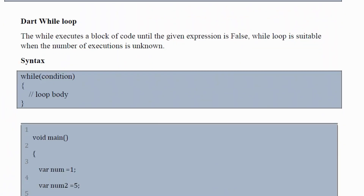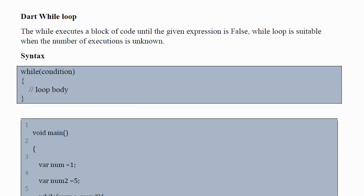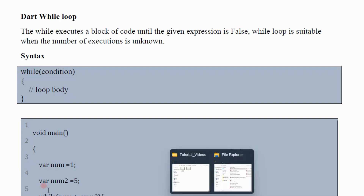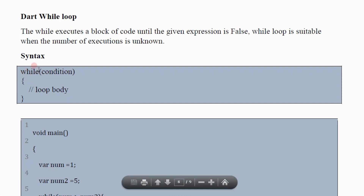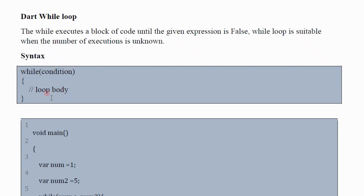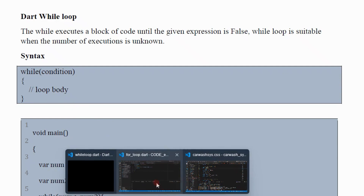Next, let's look at the while loop. A while loop executes a block of code until the given expression is false, and it is suitable when the number of executions is unknown. The syntax: you write 'while', then the condition it needs to meet inside parentheses, then the loop body. Let's jump into an example.